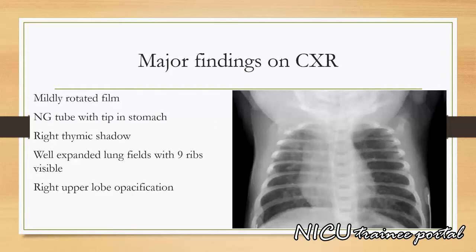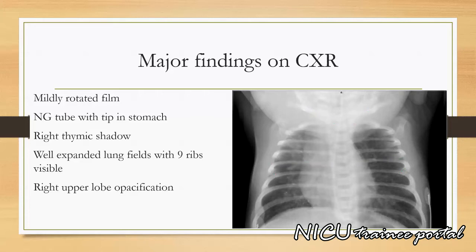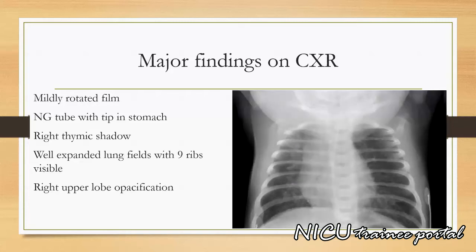This is a portable AP chest x-ray of our patient with correct right-left orientation. The film is mildly rotated as can be seen by the asymmetric positioning of the clavicles and the ribs. The NG tube is in place with the tip terminating in the stomach. The thymus is noted particularly on the right with mild indentation where it comes in contact with the ribs. Due to the degree of rotation and the presence of the thymus, the cardiac silhouette appears artifactually displaced to the right.